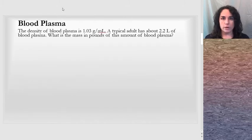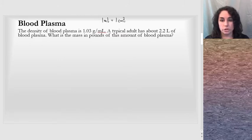The first practice problem I've chosen is blood plasma. The density of blood plasma is 1.03 grams per milliliter. I'm going to note just off to the side here, for your own context, a milliliter cubed is a centimeter cubed. A typical adult has about 2.2 liters of blood plasma. I'm going to note that liters is a volume. When you think about buying water, you get a liter bottle of water. What is the mass in pounds of this amount of blood plasma?